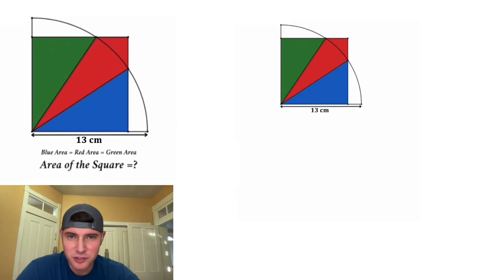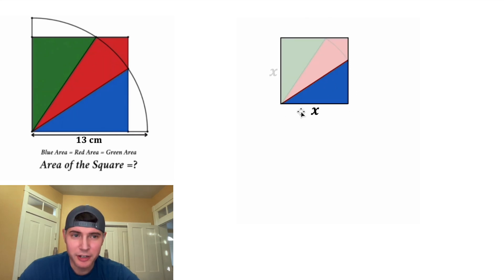Let's copy down and let's focus on the square. Let's label the sides of the square x. So ultimately we're trying to find x squared. I want to focus on this blue triangle right here. It has a base of x, and let's label the height y. And since the blue area equals the red area equals the green area, we know that this triangle is one-third of the entire square.